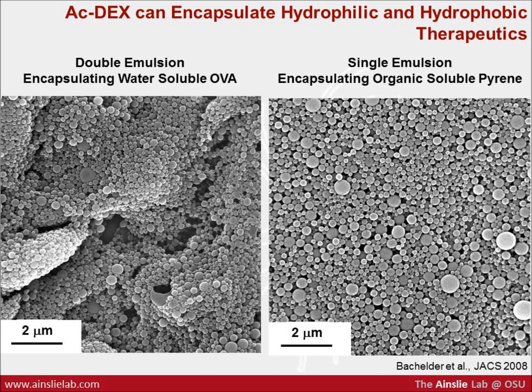The primary construct that we use are micro and nanoparticles. These can be formed through a variety of methods. The one in the pictures here is formed through emulsion chemistry, which is a batch process. We can also use electrospray, which is a continuous process. With either method, we can encapsulate organic-soluble or water-soluble moieties — so peptides, proteins, as well as small molecules that maybe have a low water solubility.